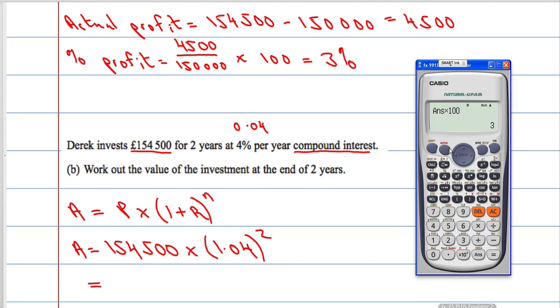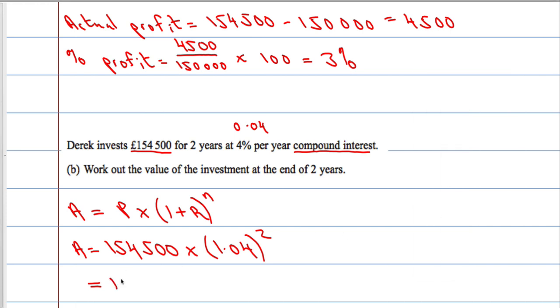So we let the calculator do all the work here. 154,500 multiplied by 1.04 to the brackets, to the power of 2. £167,107.2.